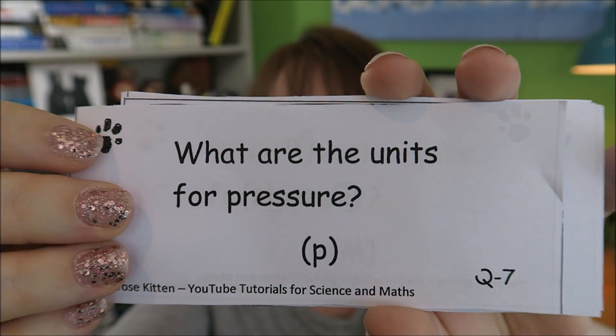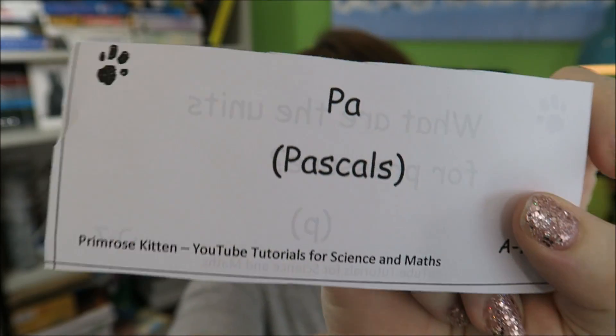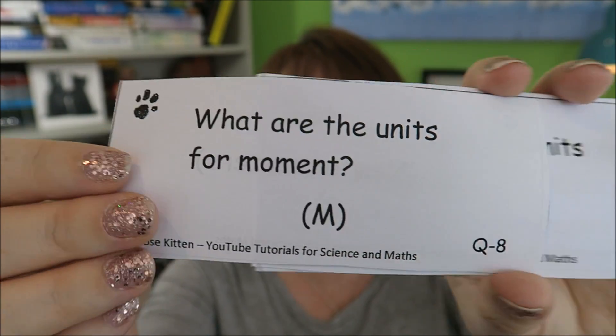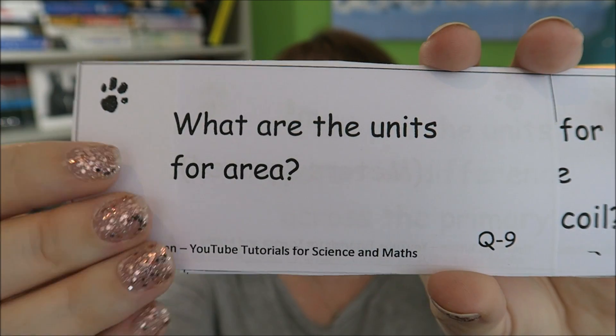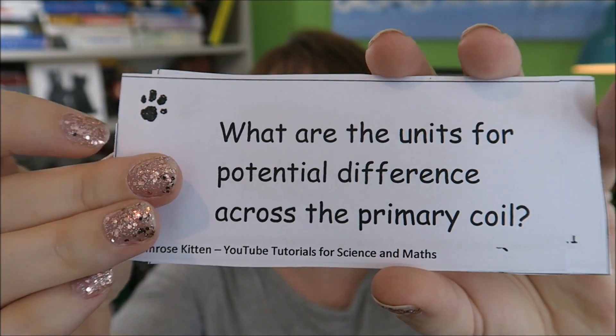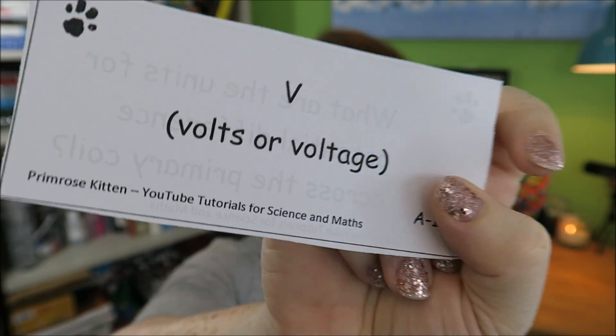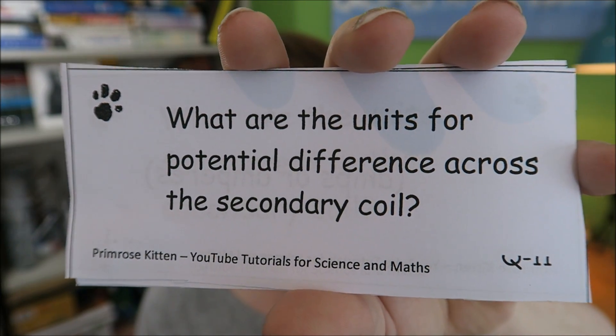Right, those are all the ones that you need for combined science. There are some extra ones that you need for triple science. What are the units for pressure? Pressure is measured in pascals. What are the units for moment? Moment is measured in newton meters. What are the units for area? Area is measured in meters squared. Linking back to your maths is really good — you need to be able to convert between meters, meters squared, and meters cubed. What are the units for potential difference across the primary coil? This is just potential difference, so it's exactly the same as volts. What are the units for potential difference across the secondary coil? Again, this is just potential difference, so this is just volts again.